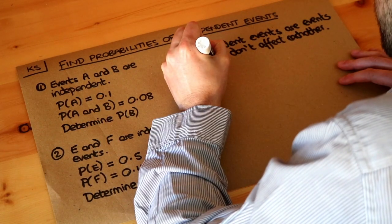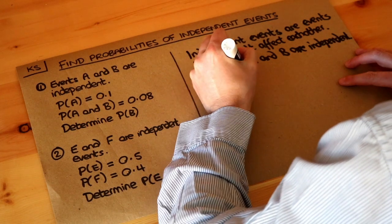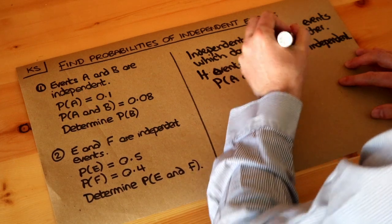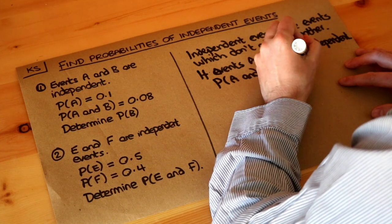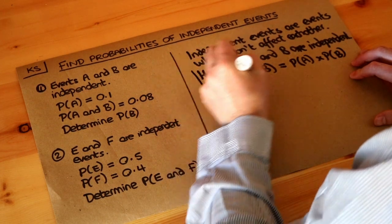If two events A and B are independent, then the probability of A happening and B happening is just the product of A happening times the probability of B happening. So that's the key formula here.